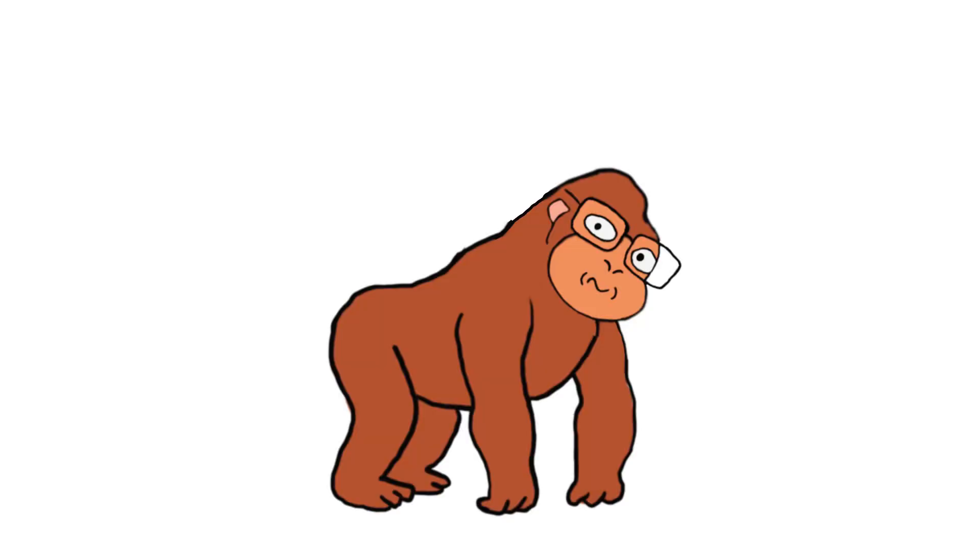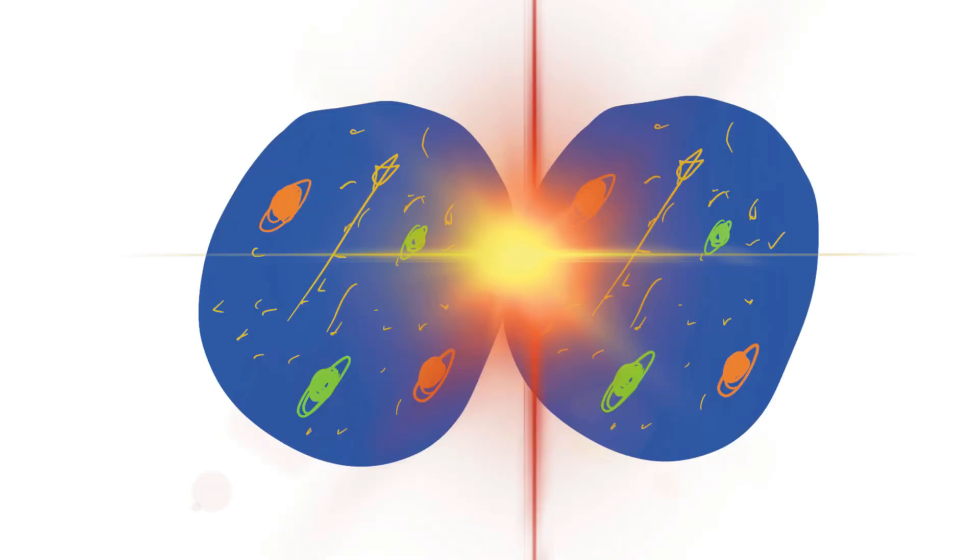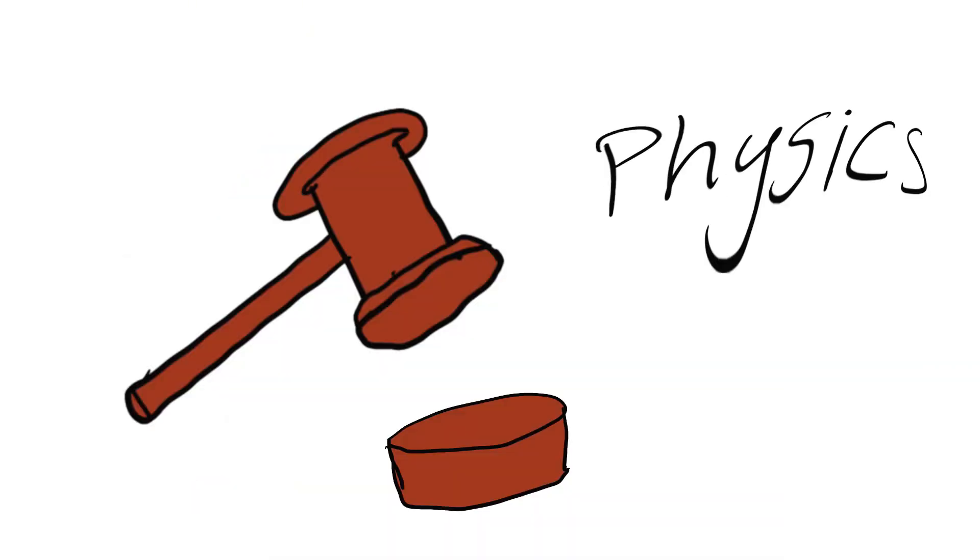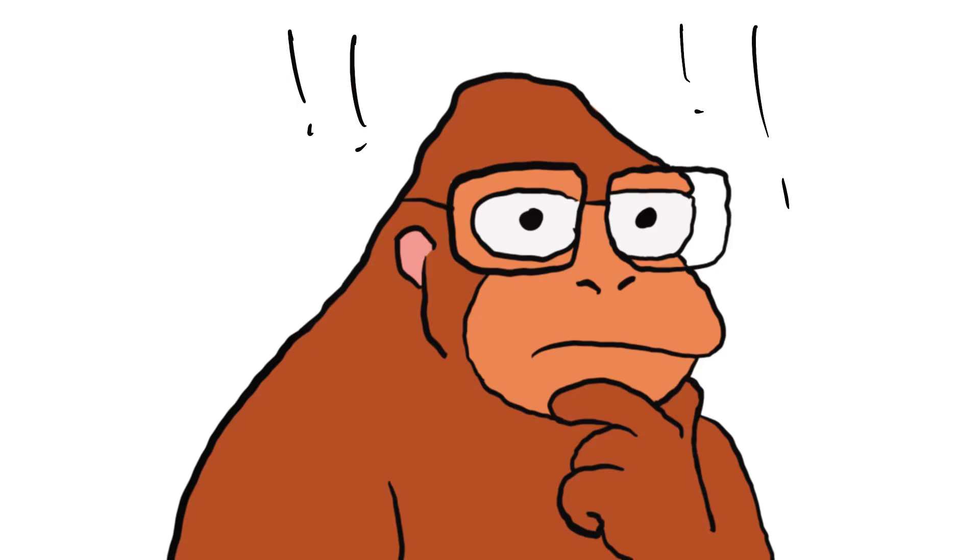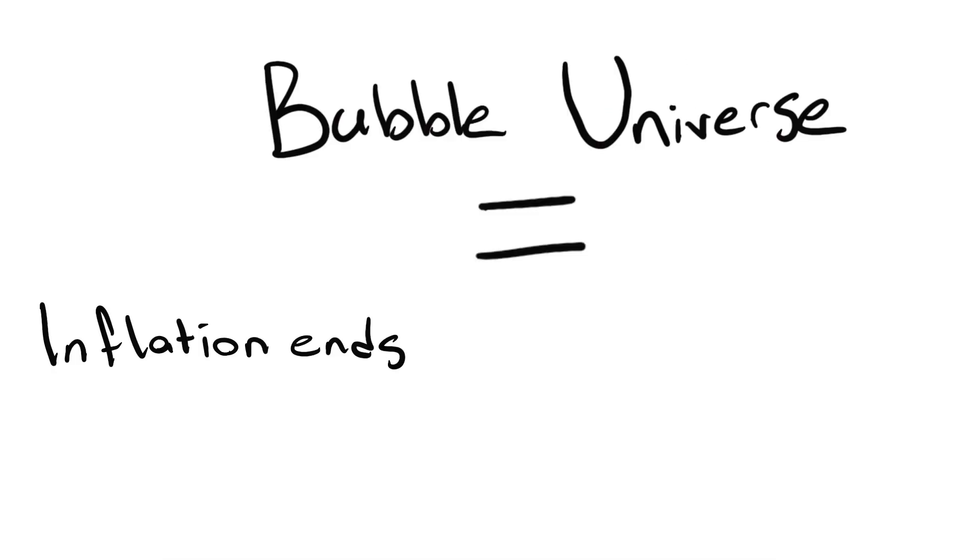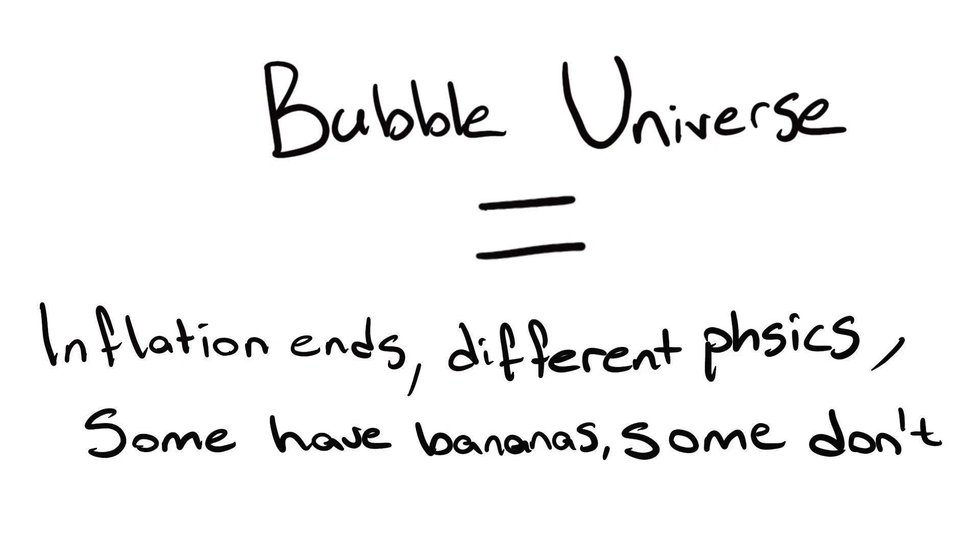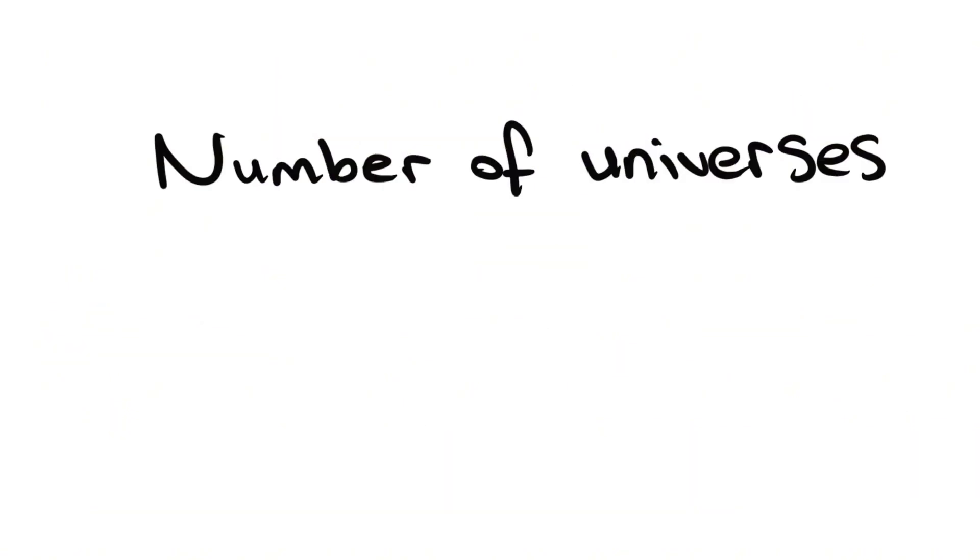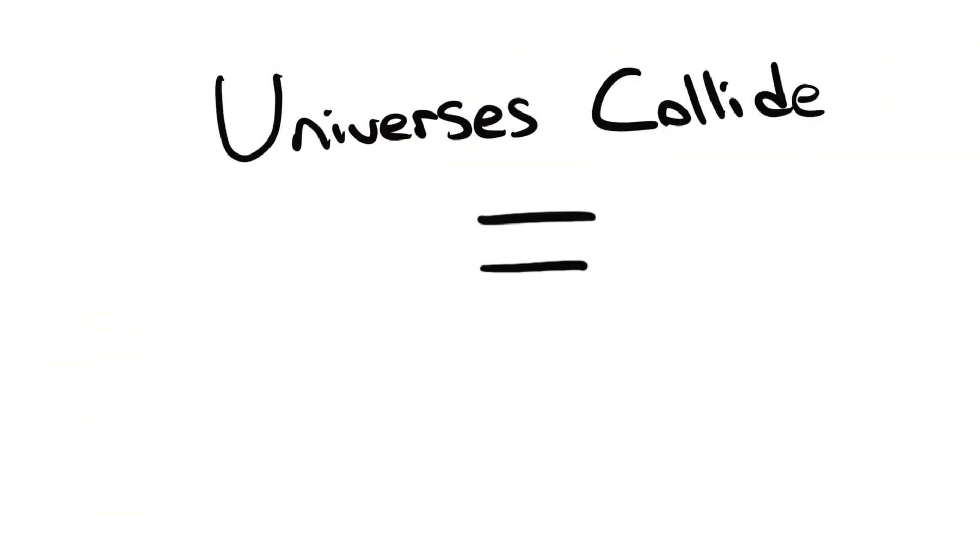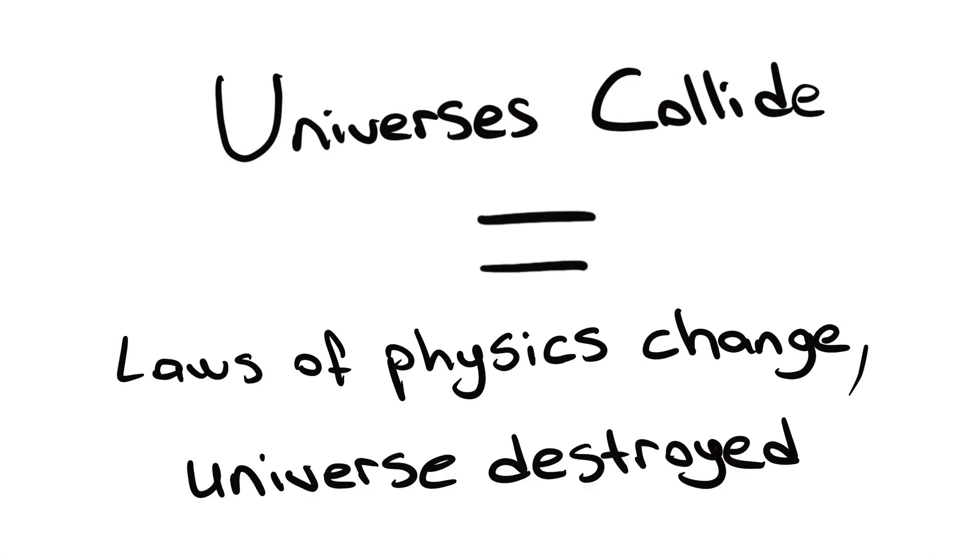Also, Monkey said, depending on the strength of the collision, the laws of physics could change, so our universe could disappear. Monkey added in his notes: bubble universe equals inflation ends at different times in different universes. Different laws of physics. Some universes have bananas and some don't. Number of universes equals infinity. Universes collided equals laws of physics changed, universe destroyed.